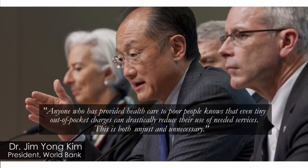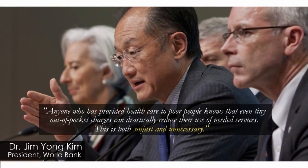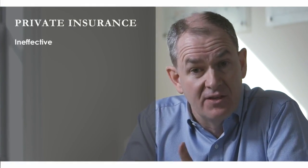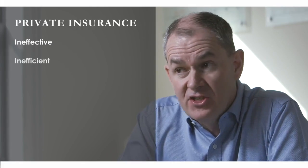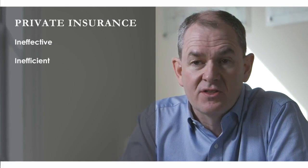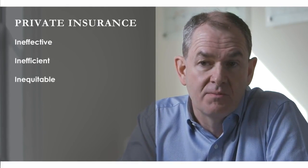The President of the World Bank has recently said that user fees are unjust and unnecessary. Others have suggested financing a health system through private voluntary insurance, including community-based insurance, which is being piloted in a number of developing countries. But the evidence shows this isn't a viable route to universal health coverage, because private insurance tends to be ineffective, often doesn't raise enough money, is inefficient, has extremely high administration costs, and is also inequitable because it excludes the poor.